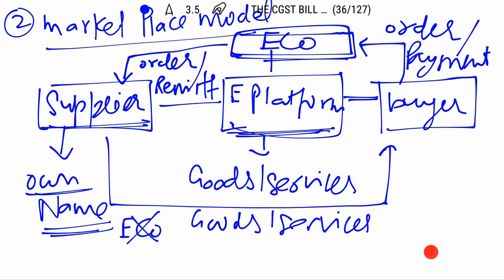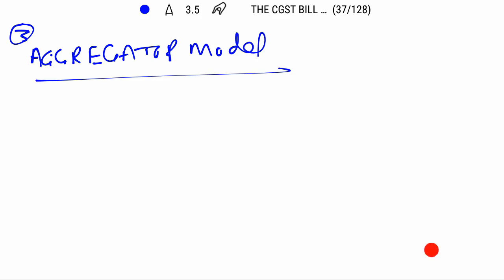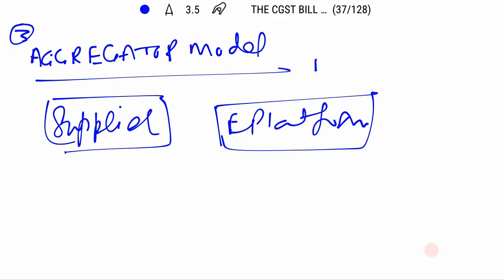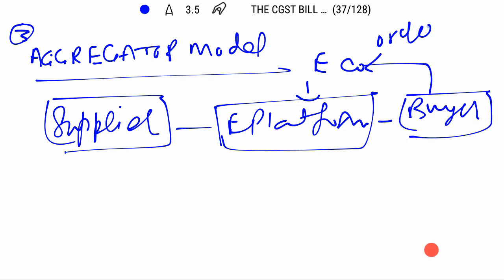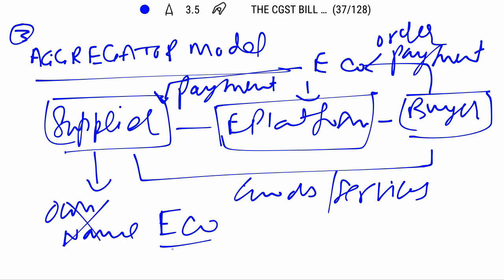The third model is the aggregator model. The aggregator model is almost similar to the marketplace model — the supplier does not own its own electronic platform; instead, the ECO's platform is used for the buyer. The buyer places the order and makes payment to the ECO. The ECO, after charging some commission or fees, passes the payment to the supplier. The supplier then delivers goods and services to the buyer. The major difference here is that in the aggregator model, the supplier does not use its own brand name — instead, the ECO's brand name is used. In the marketplace model, the supplier's own brand name is used.